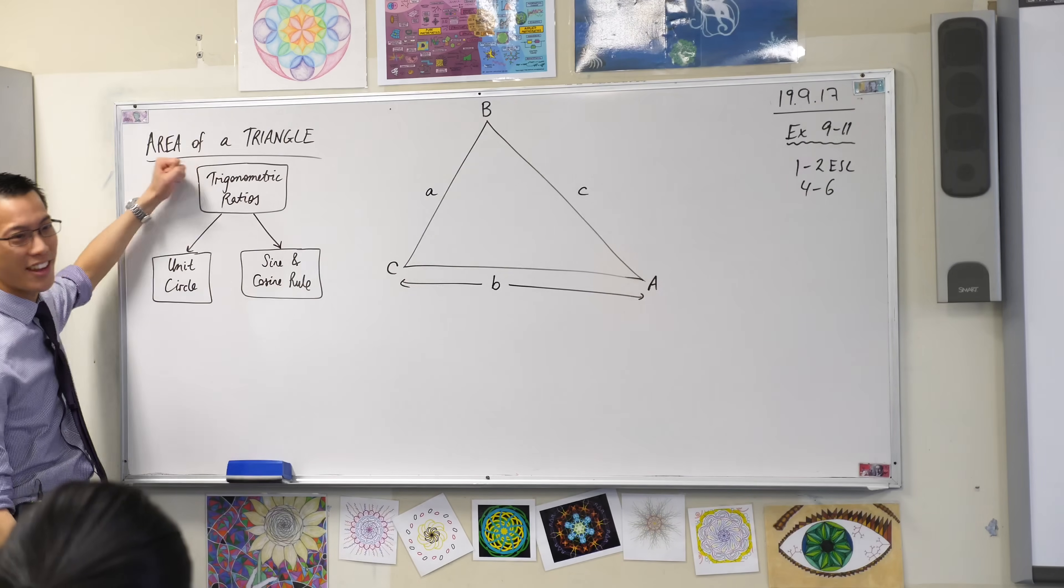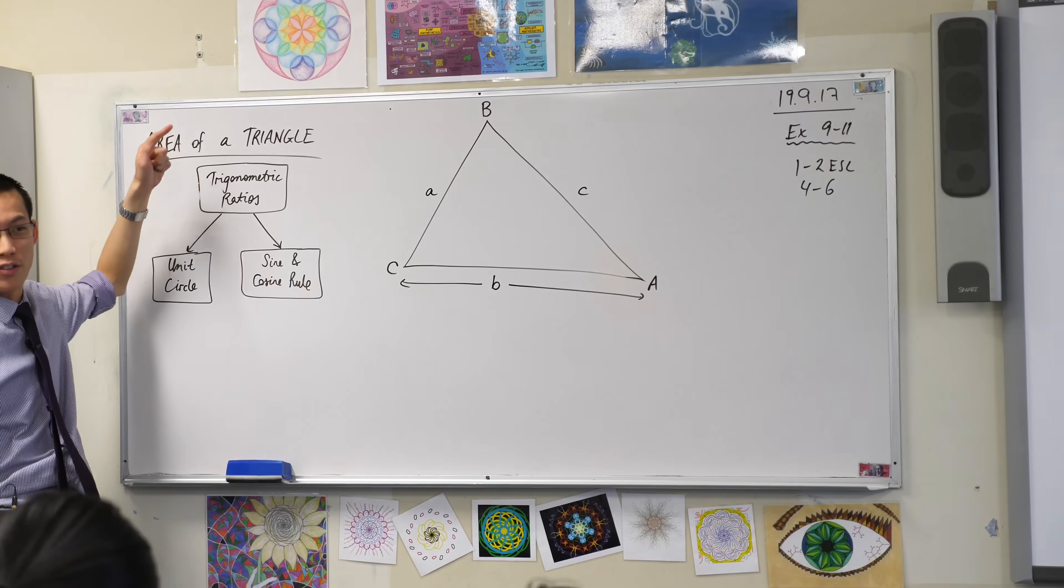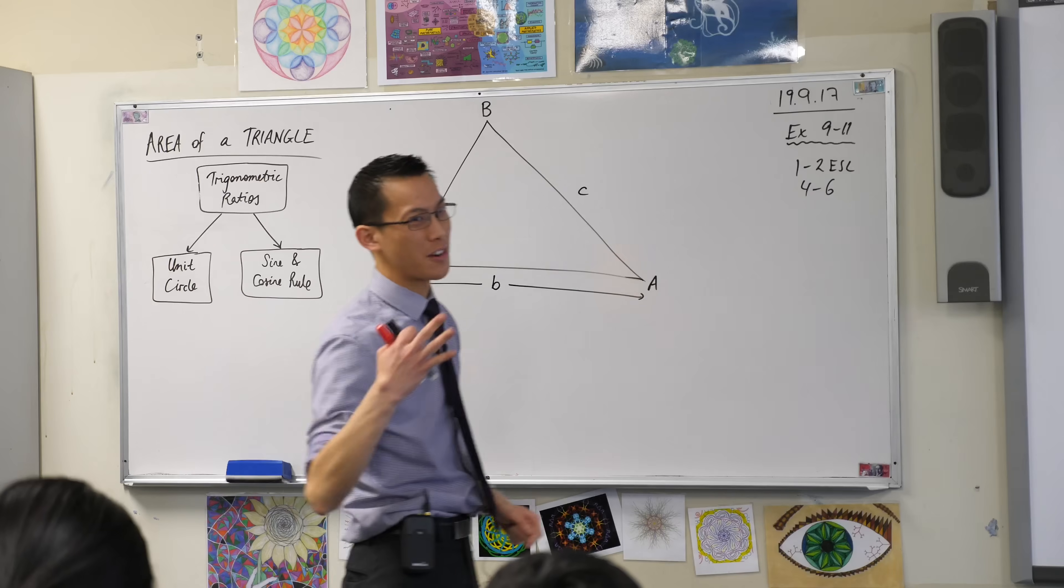In trigonometry, we started learning about trigonometry with these things called the trigonometric ratios. There are three of them, what are they called?